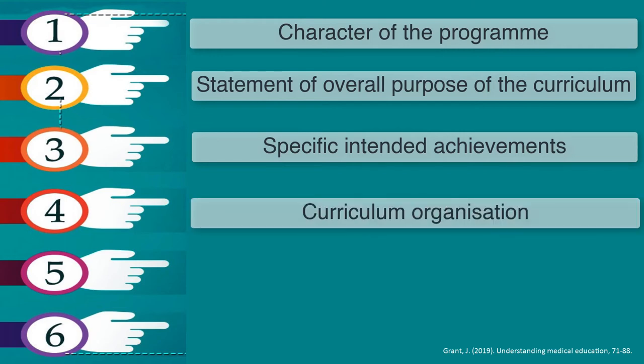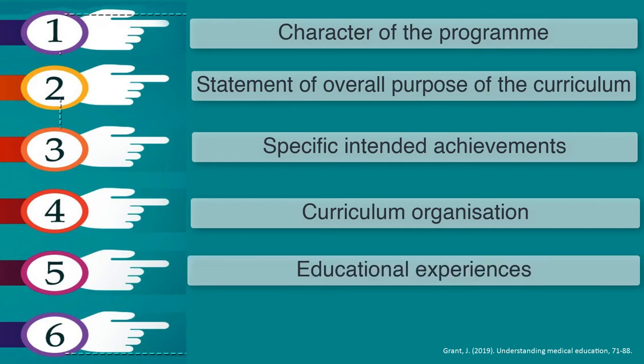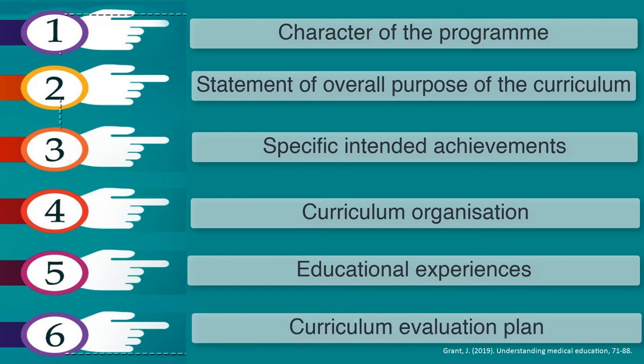The fourth step is to define the curricular structure or organization: what type of curriculum will be delivered, what are the contents and how will they be organized. The fifth stage is to define the educational experiences — how the learning results will be assessed in each course, what the learning strategies will be, the learning resources, and in what context the curriculum will take place. Finally, the sixth stage is how to evaluate the effectiveness of the curriculum — whether it is being developed effectively or not — which is rather focused on quality control and quality assurance.